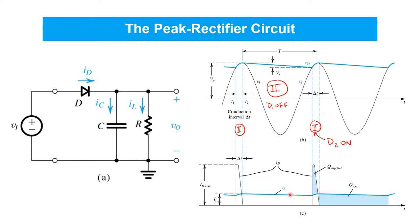The current delivered to the load IL is plotted here in blue. It's simply equal to VO divided by the load resistor R, so it has the exact same shape. It's therefore relatively constant with a little bit of ripple, which we'll want to quantify later. That current flows constantly during phase two, and all of it is coming from the capacitor C because the diode's off.